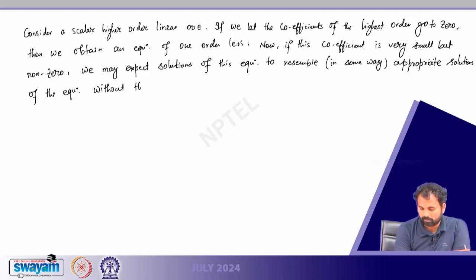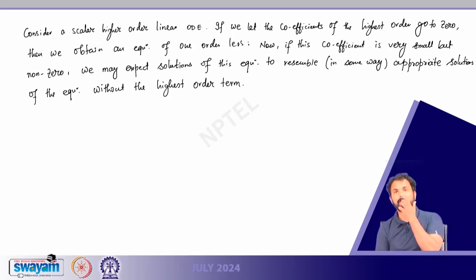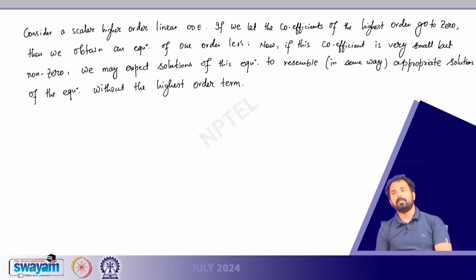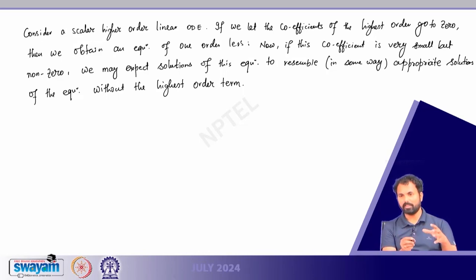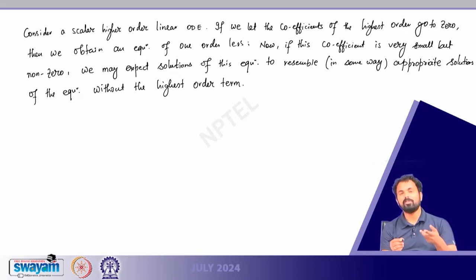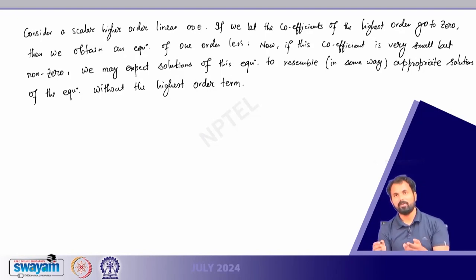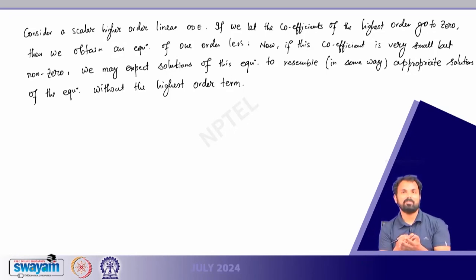The highest order term should not interrupt the solution of — in the case of a second order ODE — the first order ODE. That means there is a small perturbation but that small perturbation is not interrupting the solution of the equation where this highest order derivative is not present. That is what we usually mean by perturbation: you are bringing a small disturbance into the equation such that due to the presence of that perturbation the solution still behaves the same and does not become unstable.